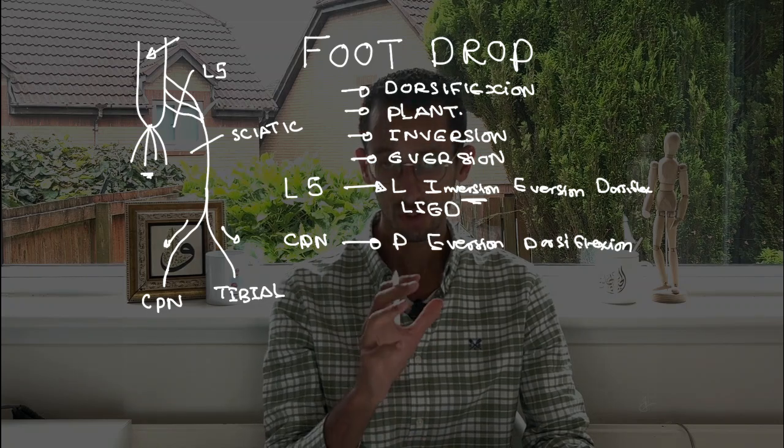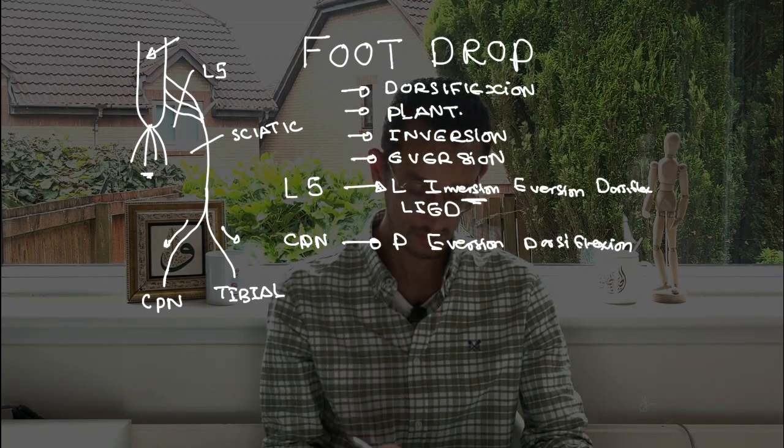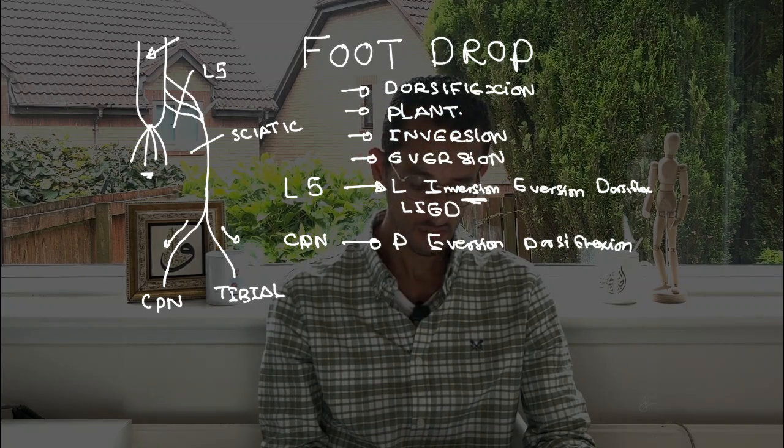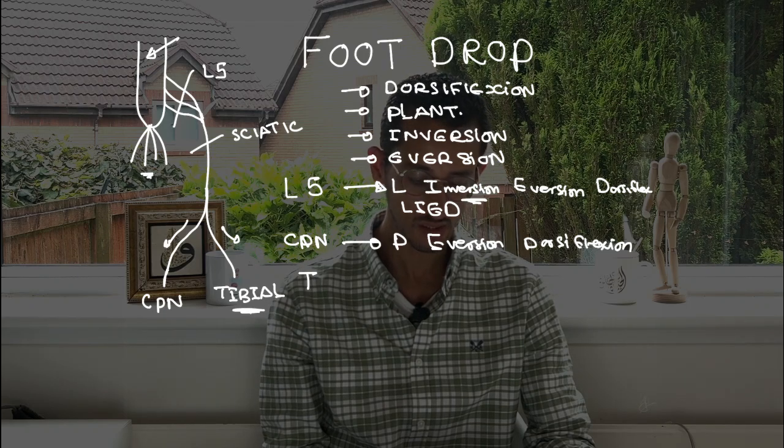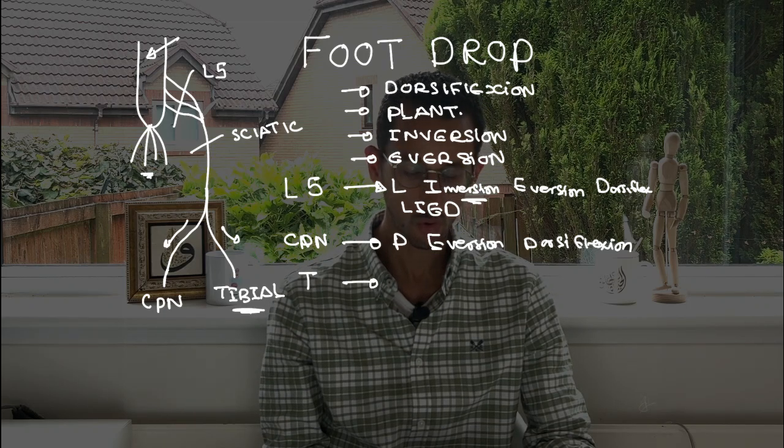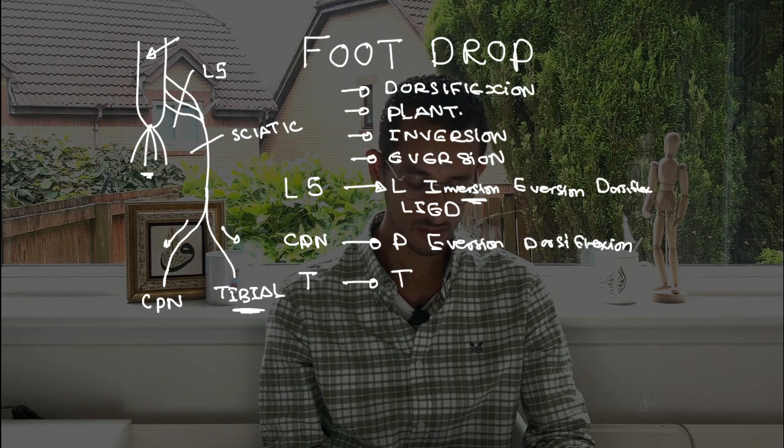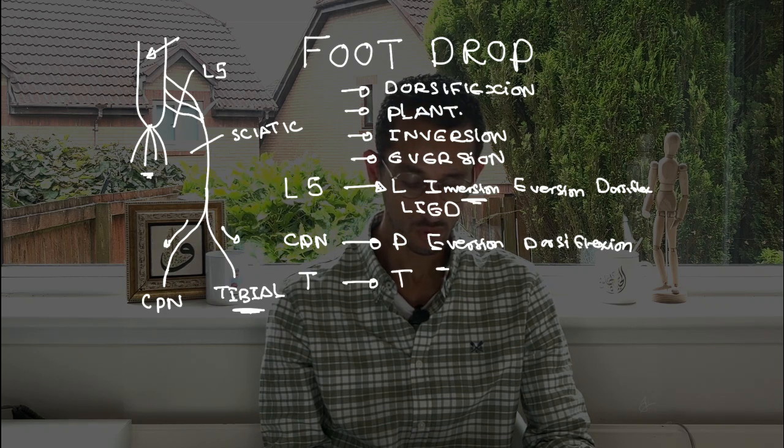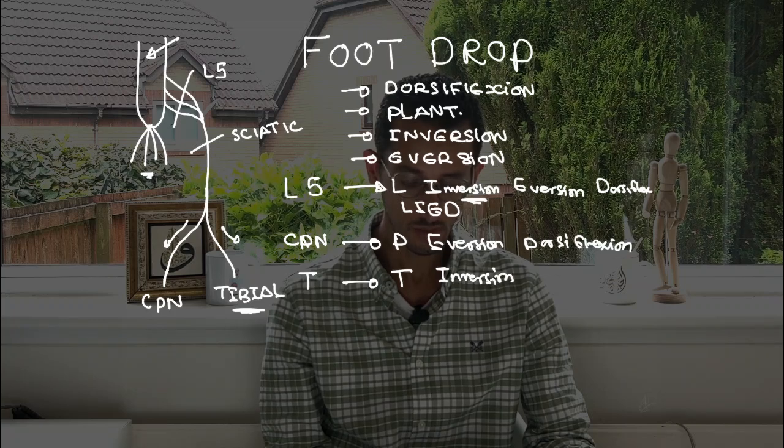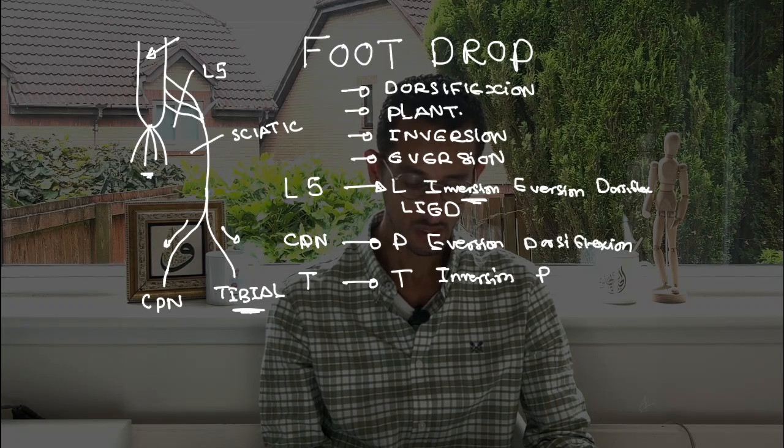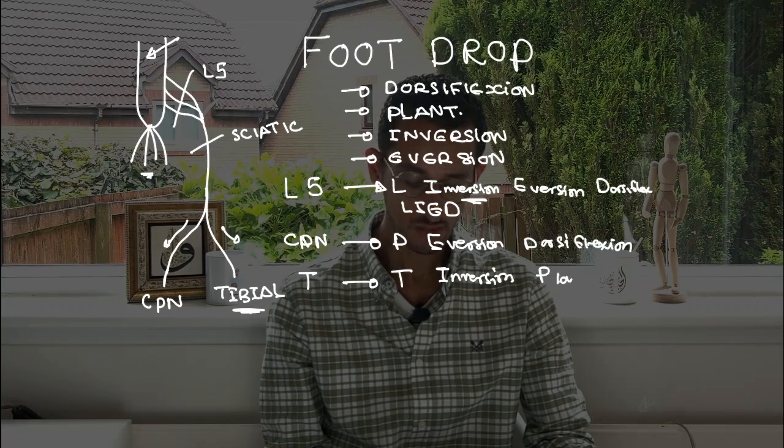As you can see, the main difference here is that the L5 will do inversion, which is not included in the peroneal nerve, which is one of the main factors to differentiate them. In terms of the tibial nerve, which is the other branch of the sciatic nerve as we mentioned, it will do something called TIP. So that's T for tibial nerve, I for inversion, and P which is the plantar flexion.